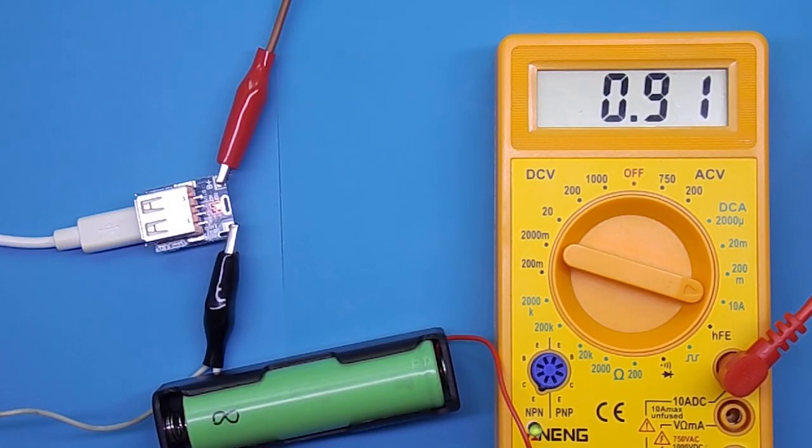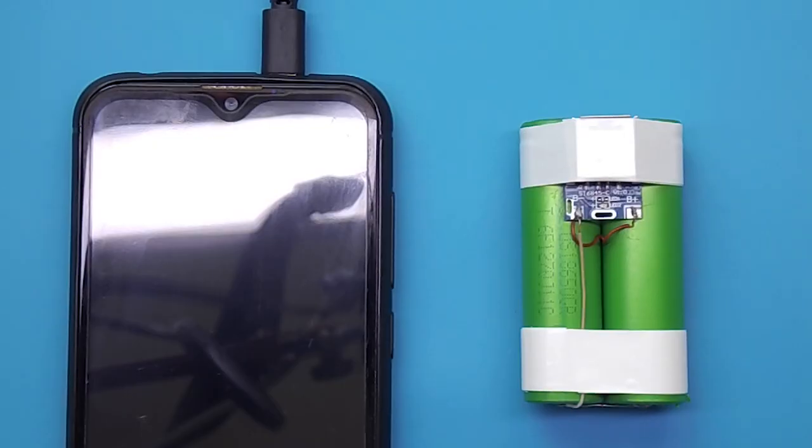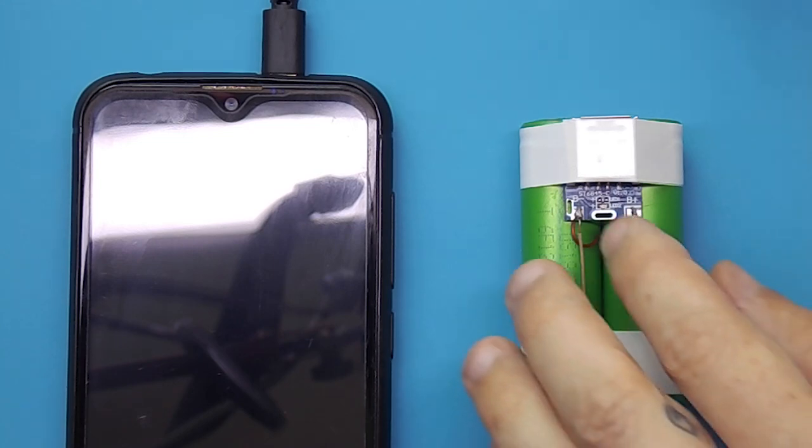Well, when the converter is in charging mode, the initial battery charge current is 0.9 amperes. With this board and two batteries, you can make such a simple power bank in half an hour.